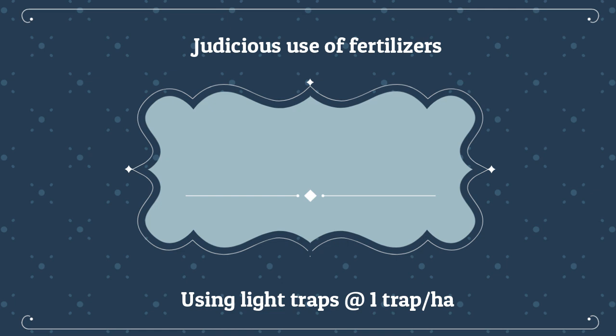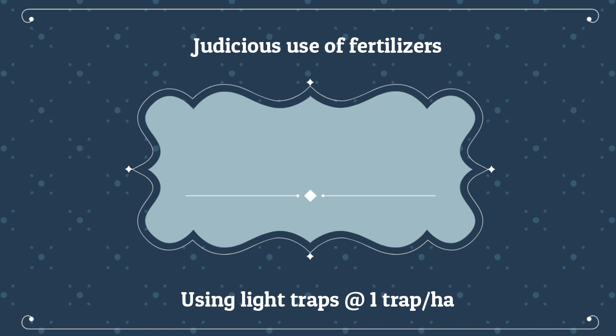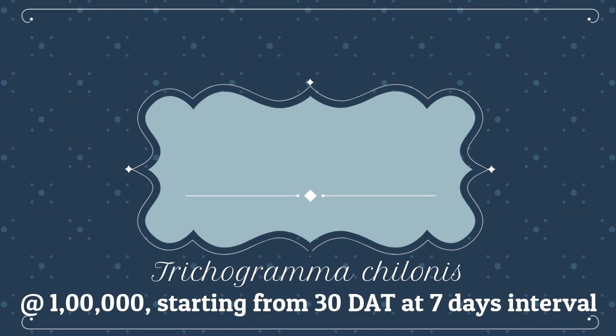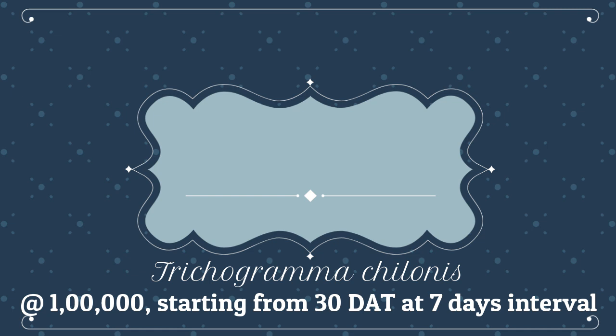Other measures include the judicious use of fertilizers, and using light traps at the rate of one trap per hectare to catch the adults. Very importantly, releasing the egg parasitoid Trichogramma chilonis at the rate of one lakh per hectare, starting from 30 days after transplanting at weekly intervals, can very well suppress this pest.